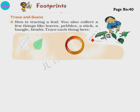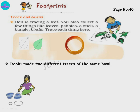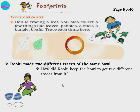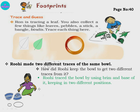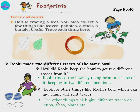Next - Ruhi made two different traces of the same bowl. How did Ruhi keep the bowl to get two different traces? Just as I told you for the bangle, you can trace inside or outside. Similarly a bowl - on the top side it is wider and the down side is smaller. Ruhi traced the bowl using the brim, which is the top open part, and the base. If you trace on the brim side by inverting it, you get a big circle, and for the down part you get a small circle. Look for other things like cups, glasses, plates that can give different traces.